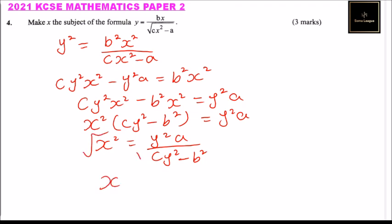And you get x equals the square root of y squared a divided by cy squared minus b squared. So that's how you make x the subject and you should be able to get three marks.